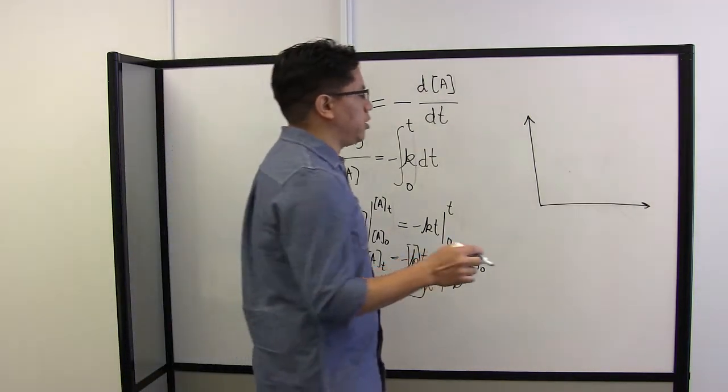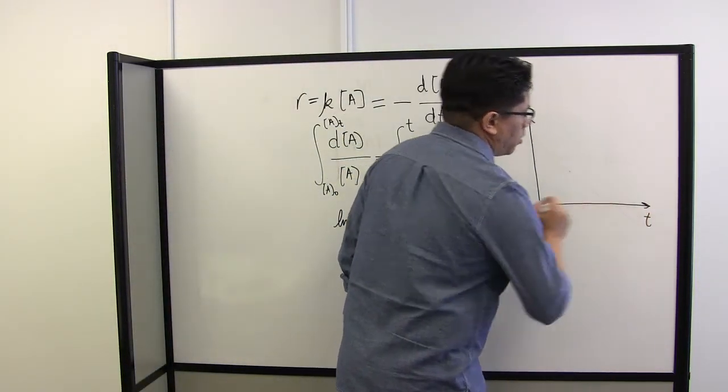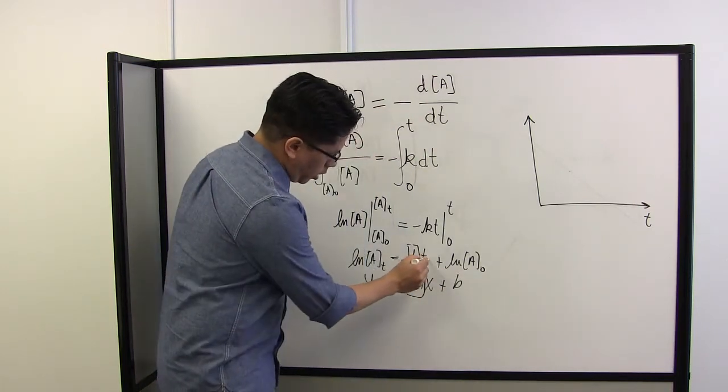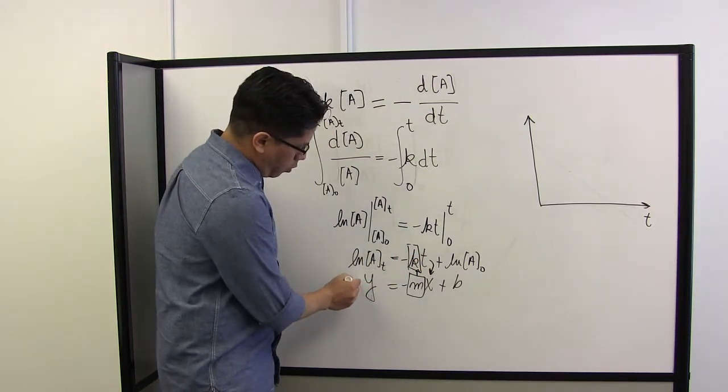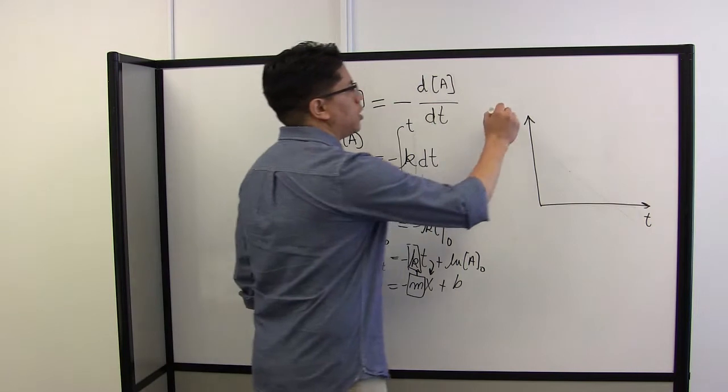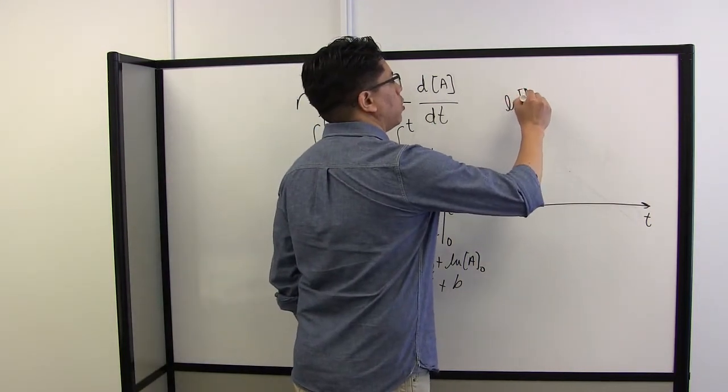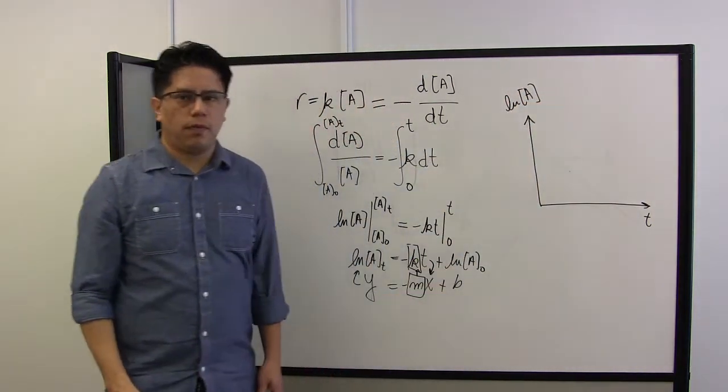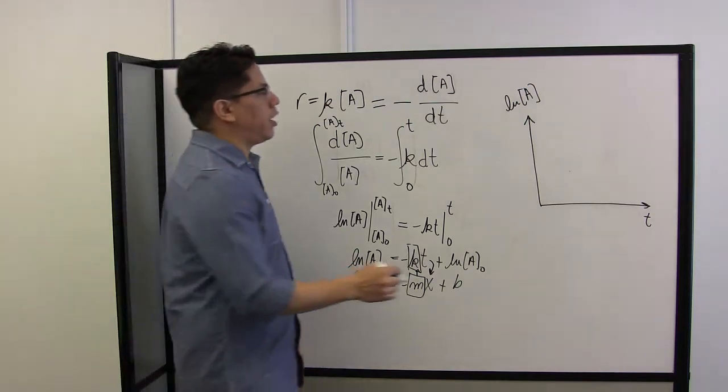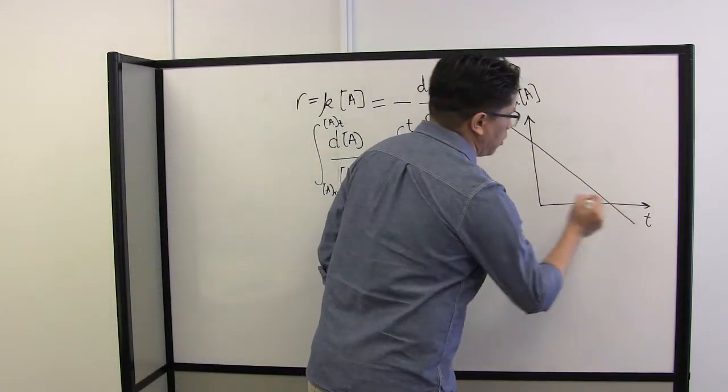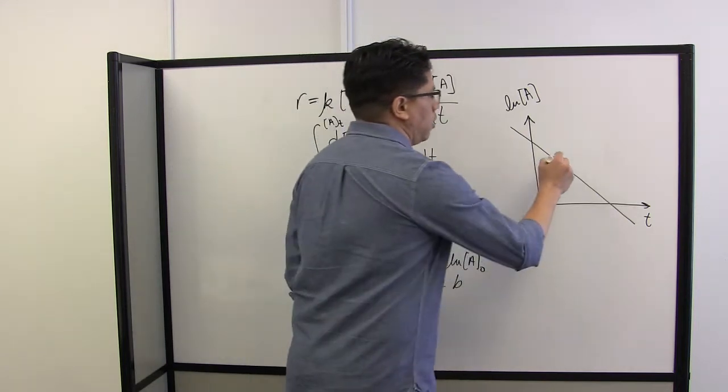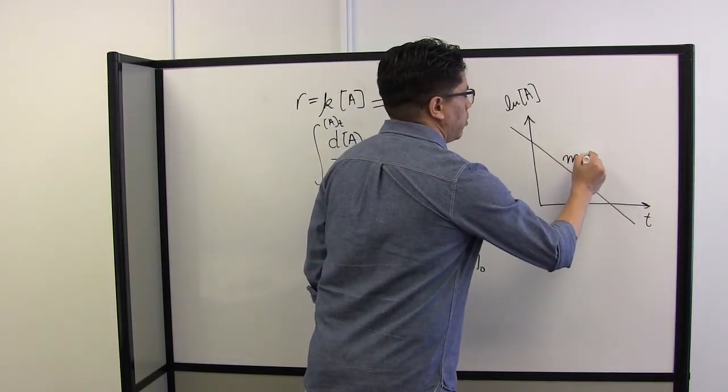And we're going to plot the time on x, and on the y axis we're going to plot the natural logarithm of the concentration that we're going to measure during this laboratory. If this model works we're going to have a straight line, and for that straight line the slope is going to be the kinetic constant.